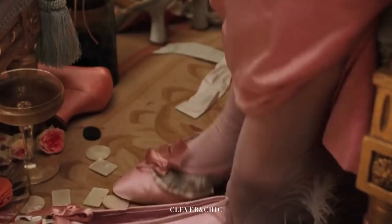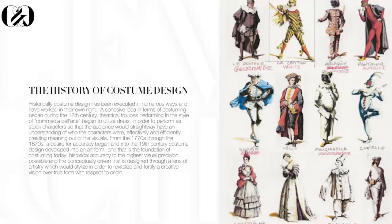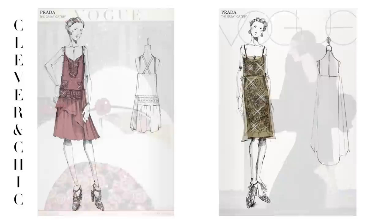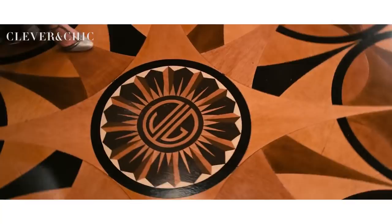True to form and stylized costume design is necessary in the same manner that fiction and non-fiction novels exist. Historically, costume design has been executed in numerous ways and have worked in their own right. A cohesive idea in terms of costuming began during the 18th century. Theatrical troupes performing in the style Commedia dell'arte began to utilize dress in order to perform as stock characters so the audience would straight away have an understanding of who the characters were, effectively and efficiently creating meaning out of the visuals. From the 1770s into the 1870s, a desire for accuracy and further depth came into the 19th century. Costume design developed into the art form we are more familiar with today: historical accuracy to the highest visual precision possible, and the conceptually driven that is designed through a lens of artistry which would stylize in order to revitalize and fortify a creative vision over true form but with respect to origin.